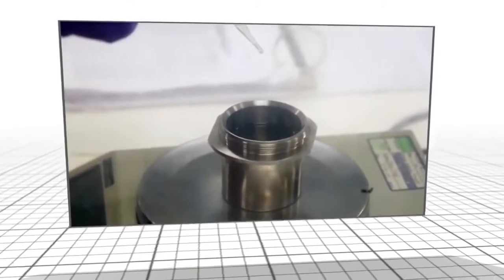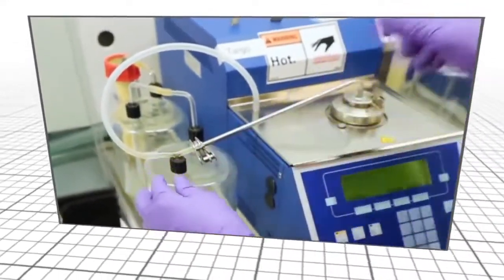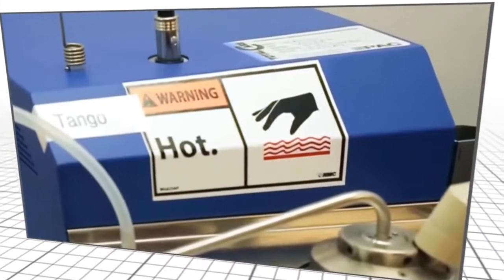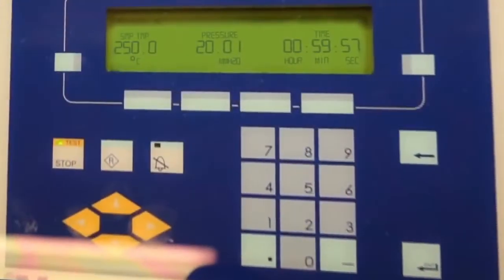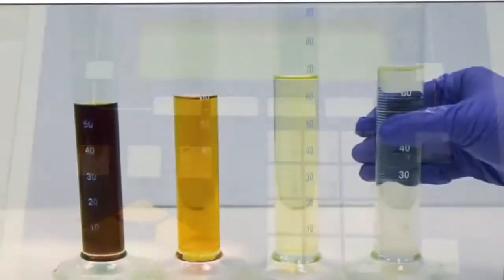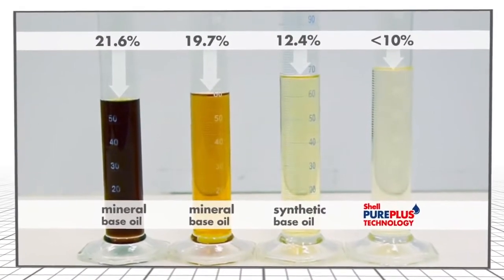Oils at high engine temperatures are prone to evaporation. Shell subjected PurePlus technology base oils to the industry standard NOAC test, which required heating the oil to 250 degrees centigrade for one hour. It's clear from the results that the PurePlus technology oil has superior resistance to evaporation.